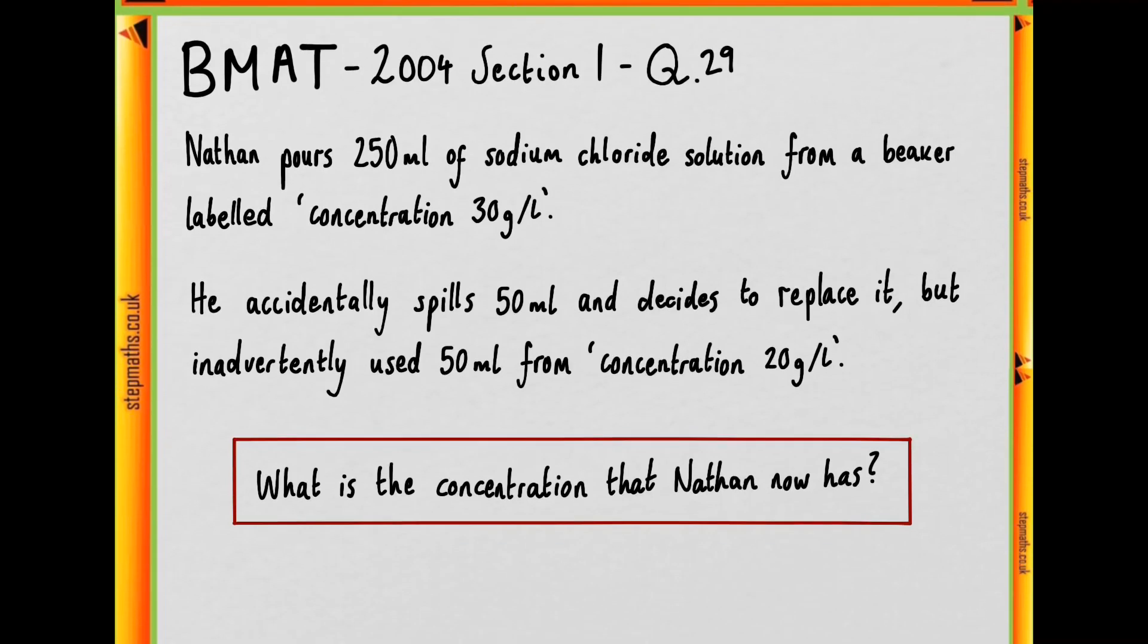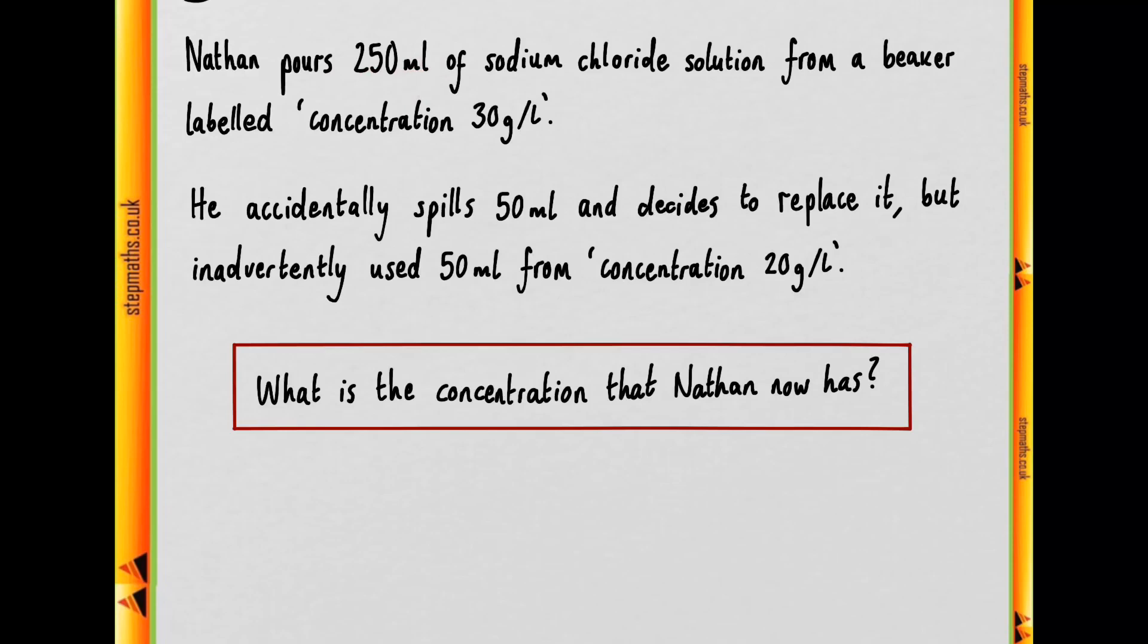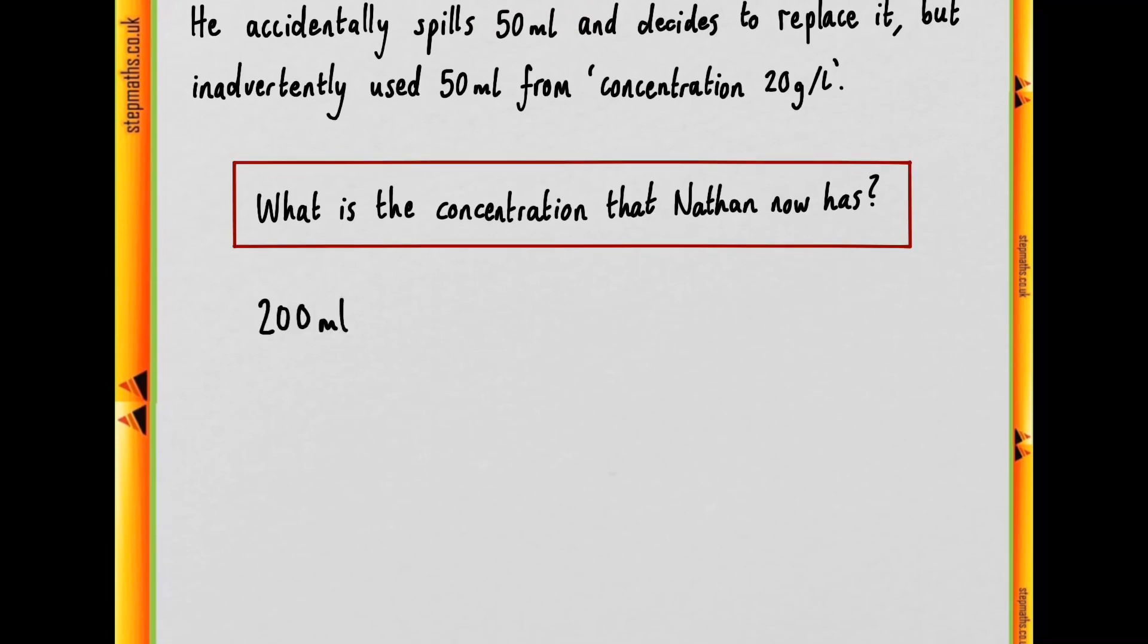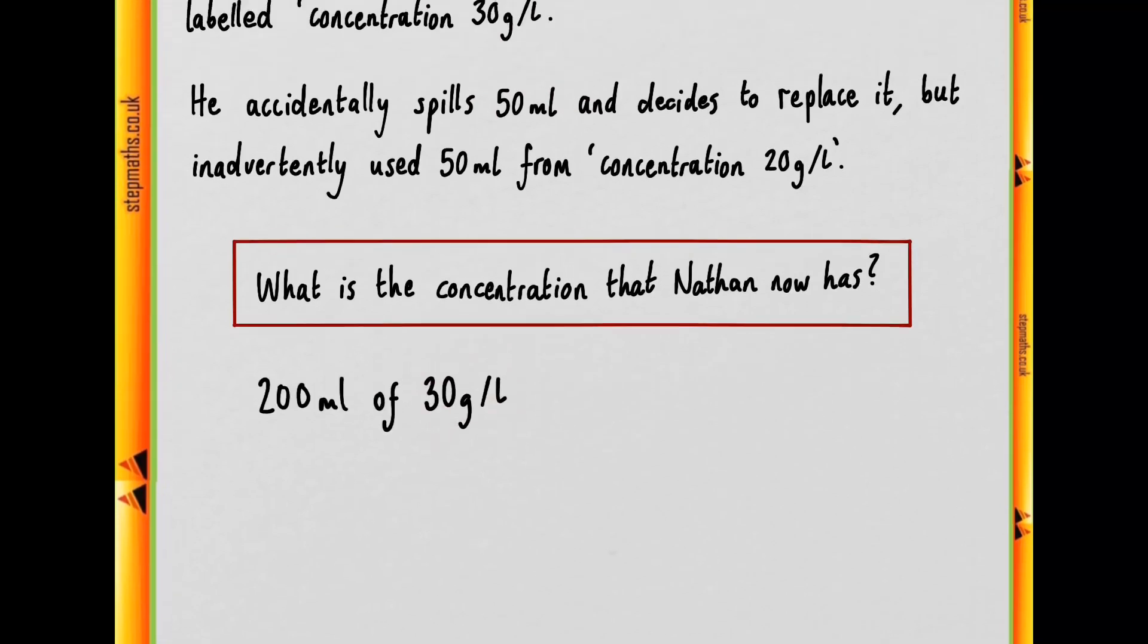Now those of you familiar with chemistry should be able to work through this quite simply, but it is quite a simple logical process to make sense of what we're given in the question. So we have 250 poured into a beaker of concentration 30 grams, but he spills 50 ml. So in our beaker we'll only have 200 ml of this 30 grams per litre solution.